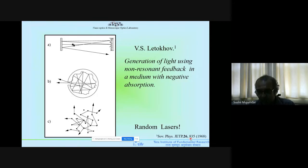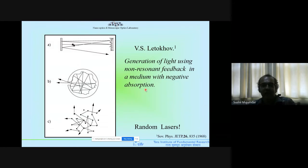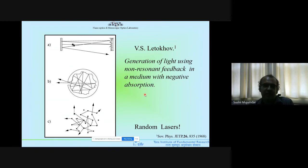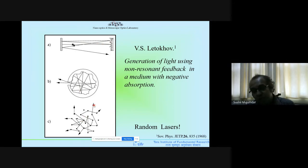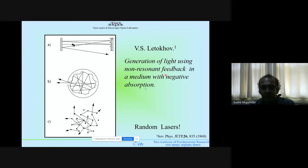That question was asked by Letokov several decades ago. A lot of theory in physics was worked out by Russian scientists in old literature, much of it originally in Russian. What Letokov suggested in a 1968 paper was that if you create a disordered system with amplification, you can increase the path of light inside the amplifying medium and create laser emission — in those days called 'generation of light.' Disorder gives non-resonant feedback. It took a long time for this theory to be seen in experiments.